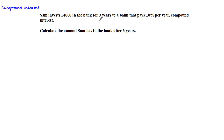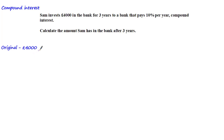Let's have a look at an example. Sam invests £4,000 in the bank for three years at a bank that pays 10% per year compound interest. Calculate the amount Sam has in the bank after three years. For compound growth and decay questions, which don't always involve money, we'll call the original investment the 'original amount' — in this case, the £4,000 Sam invested.